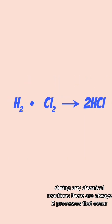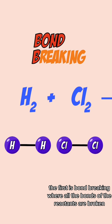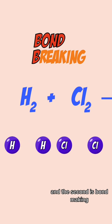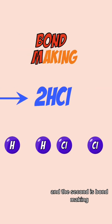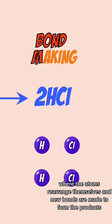During any chemical reaction, there are always two processes that occur. The first is bond breaking, where all the bonds of the reactants are broken, and the second is bond making, where the atoms rearrange themselves and new bonds are made to form the products.